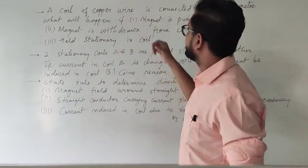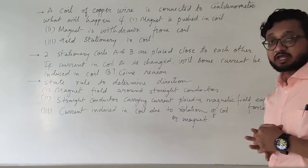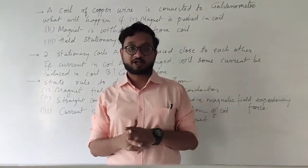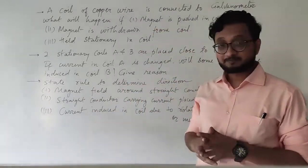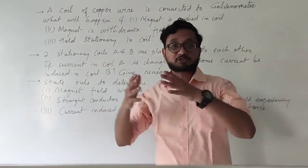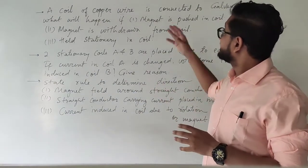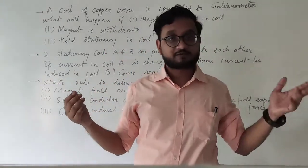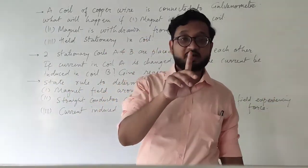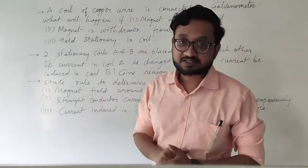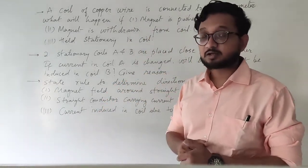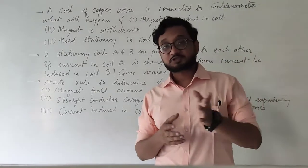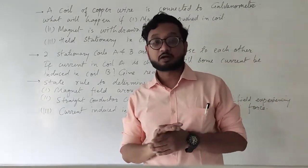A coil of copper wire is connected to a galvanometer. What will happen if a magnet is pushed into the coil? This is the electromagnetic induction experiment. When a magnet is pushed inside the coil, you will get a deflection in the galvanometer according to the direction of the magnet, which suggests that current is induced in the coil.